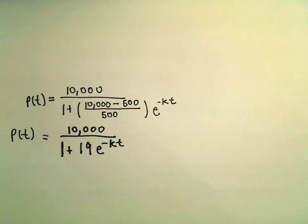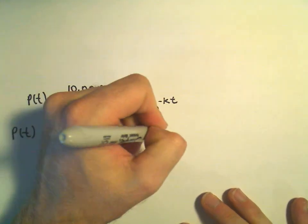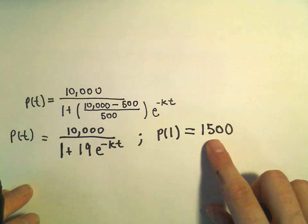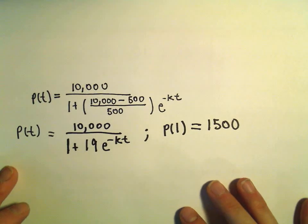So, well, that tells me then simply that the population one year later is going to equal 1,500. Again, we started with 500, so if it triples, we're now at 1,500.